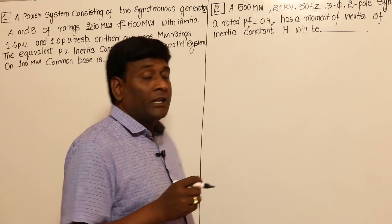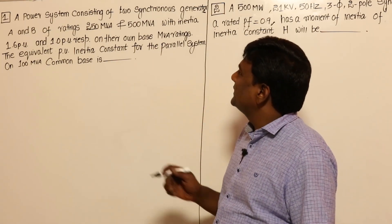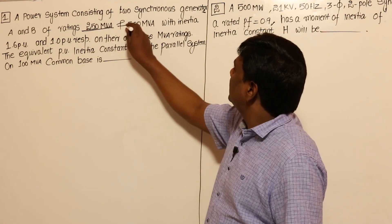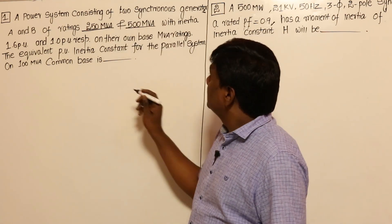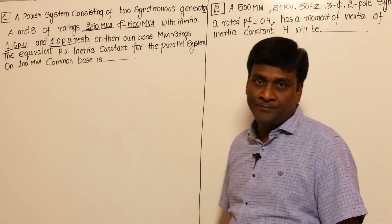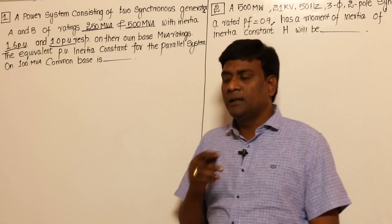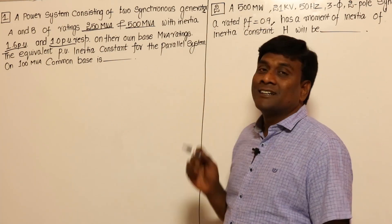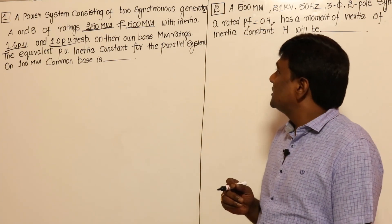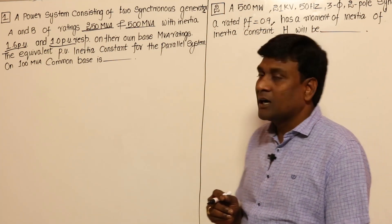Let us see here a power system consisting of two synchronous generators A and B, of ratings 250 MVA and 500 MVA with inertia constants of 1.6 per unit and 1 per unit respectively on their own base MVA ratings. Find the equivalent per unit inertia constant for the parallel system on a 100 MVA common basis.